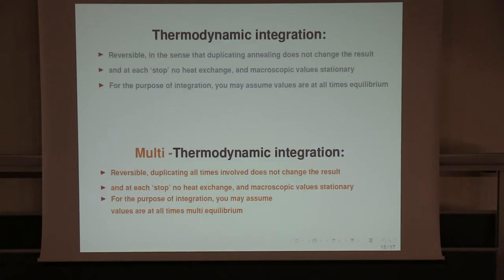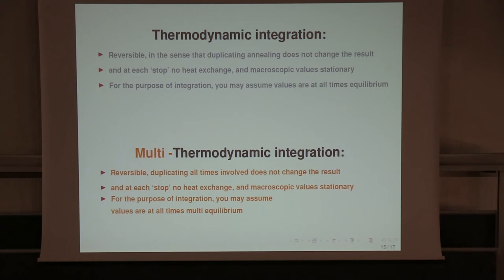What is thermodynamic integration in general? You go slowly, you measure the energy at each step, and you integrate E over T — you know this. It has to be so slow that if you did it twice as slowly, in twice as much time, you would get the same result. This is what I understand by reversible: a transformation which, done at half the speed, gives you the same result.